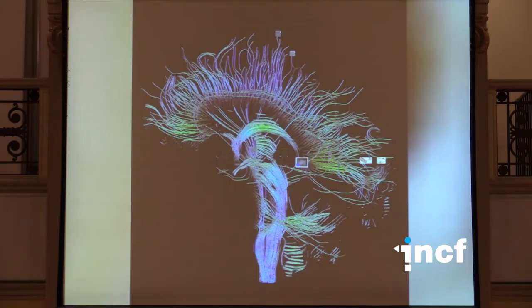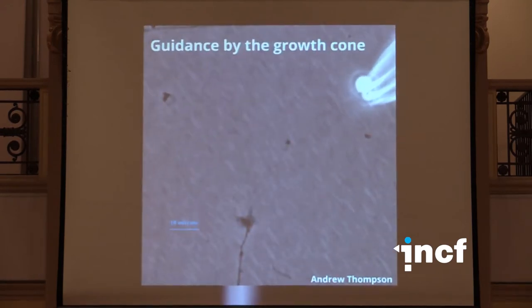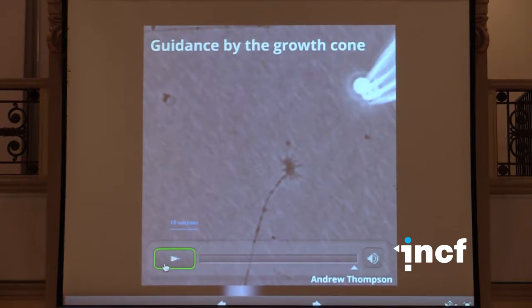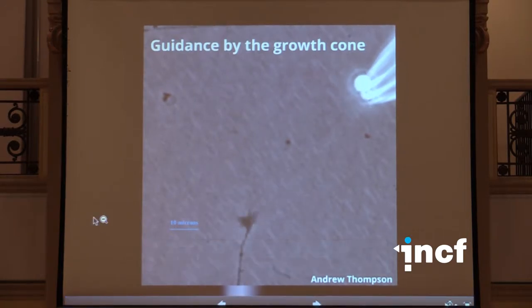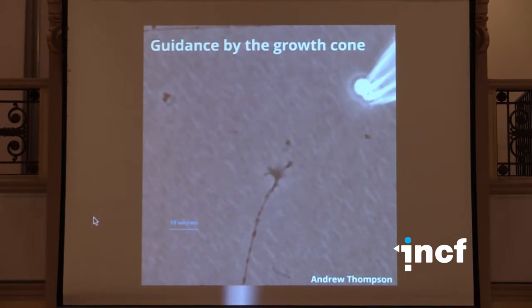If we zoom in on the tip of a developing axon, we find that it's guided by a large number of molecular cues in the local environment. At the early stages of brain development, activity does not appear to play a role in establishing the initial pattern of wiring. One of the most important types of molecular cue are molecular gradients.